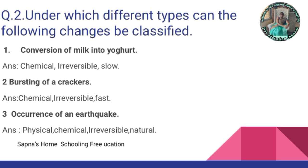The occurrence of an earthquake: it is a physical and chemical change. It is irreversible, it is natural, and it is a fast change.